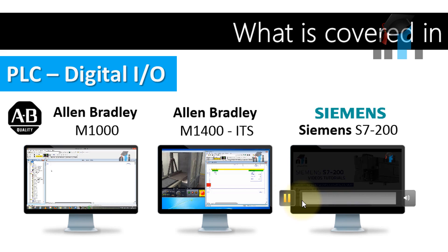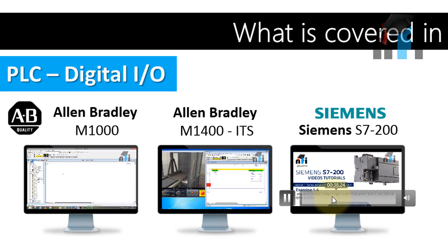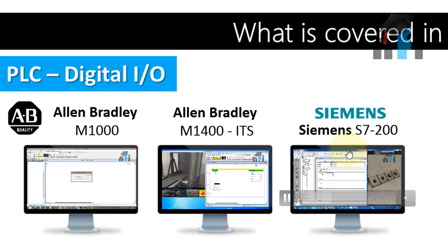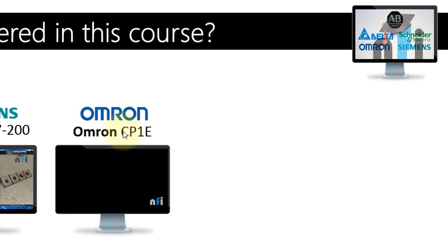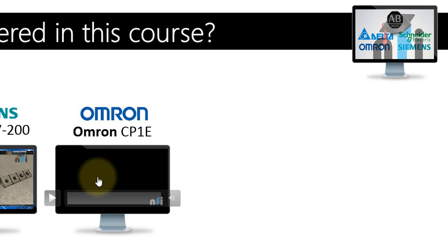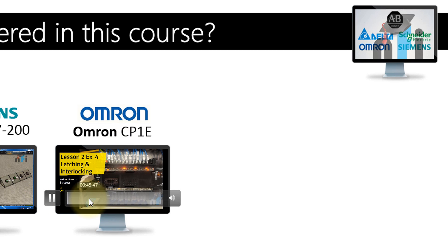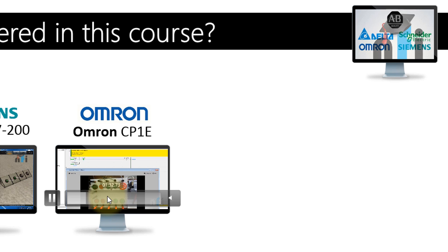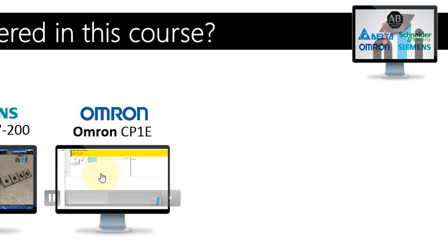Then we have Siemens S7-200. In this module, we have tutorials for Siemens S7-200 and how to program this PLC. Then we have a module of OMRON CP1E. In this module, we have the live interfacing of OMRON PLC with IOs — inputs, outputs, emergency — and I'm explaining how to wire the IOs with the PLC and then how to program it.